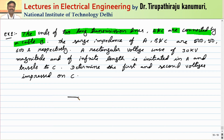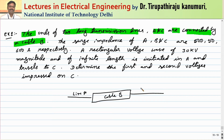The surge impedances of lines A, B, and C are 500, 50, and 600 ohms respectively. Line A has a characteristic impedance of 500 ohms, cable B is 50 ohms, and line C is 600 ohms.